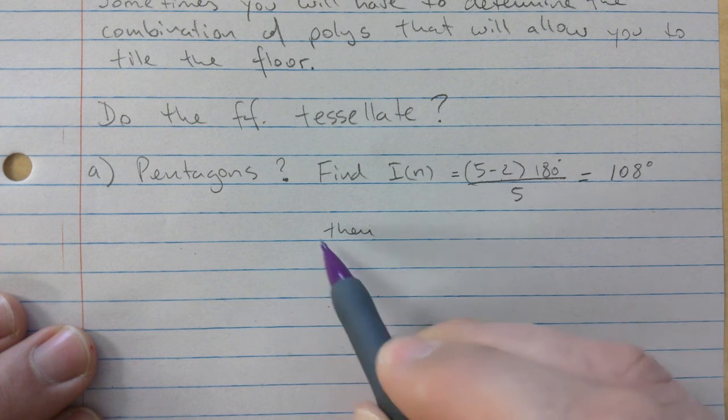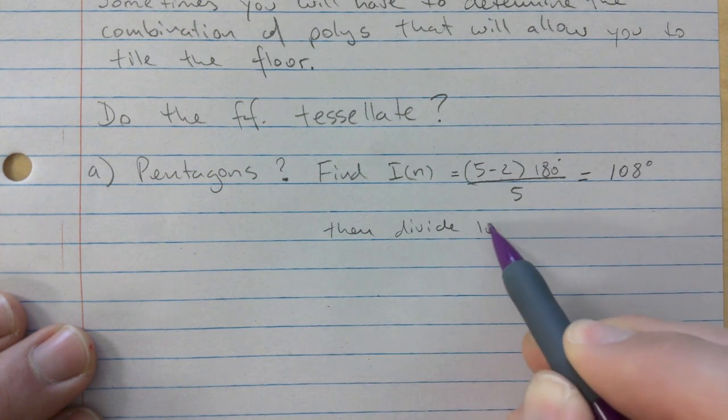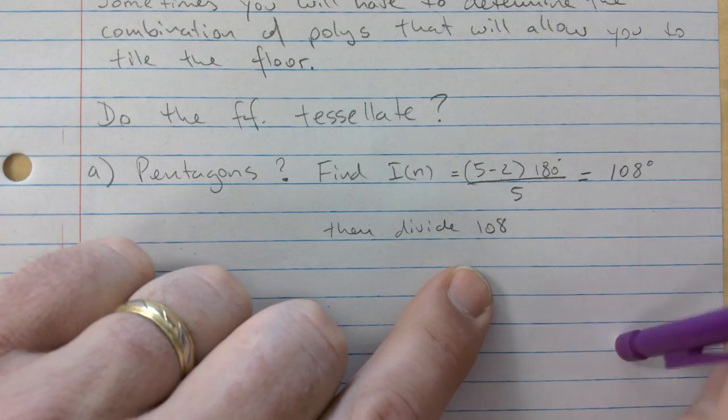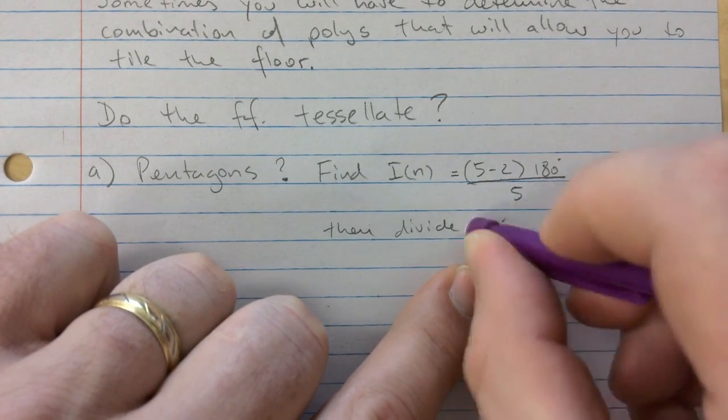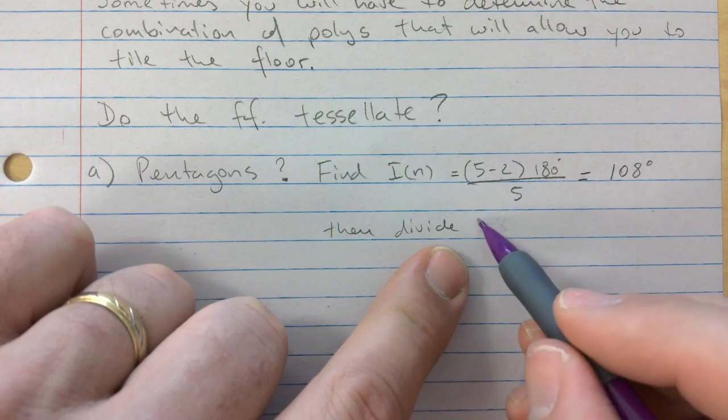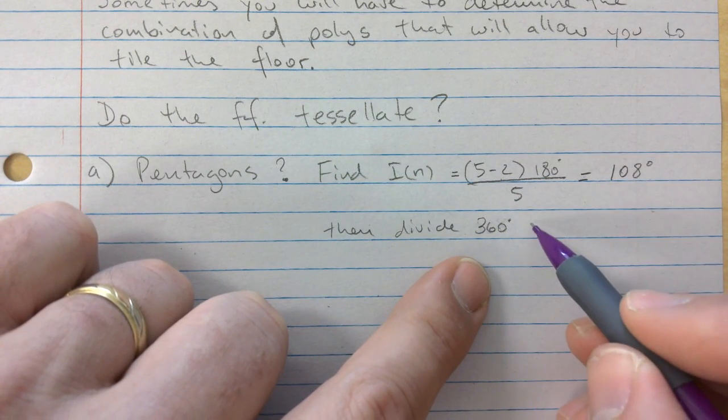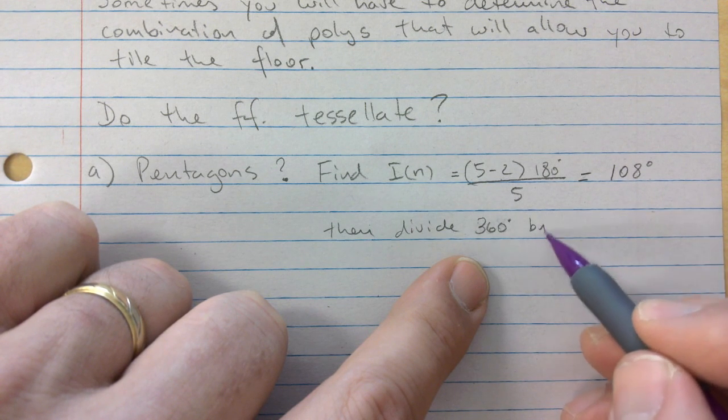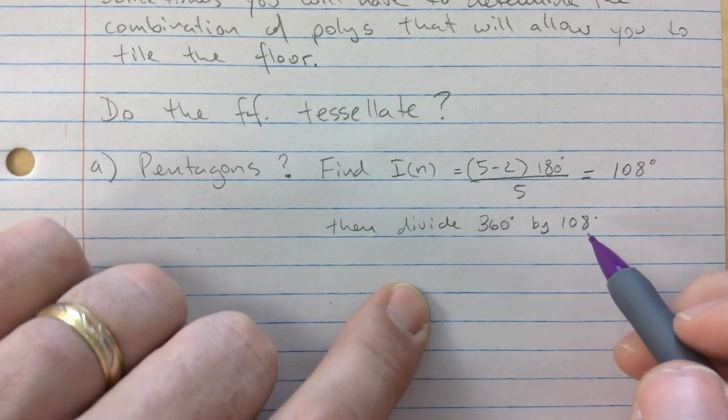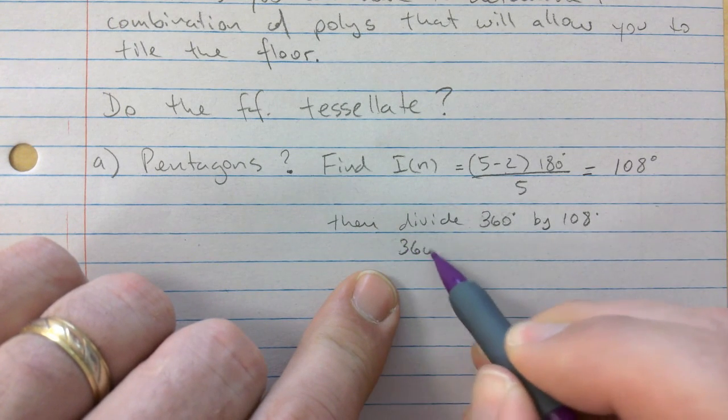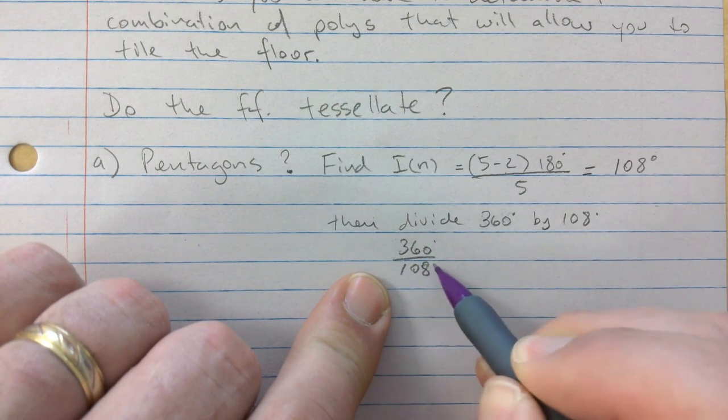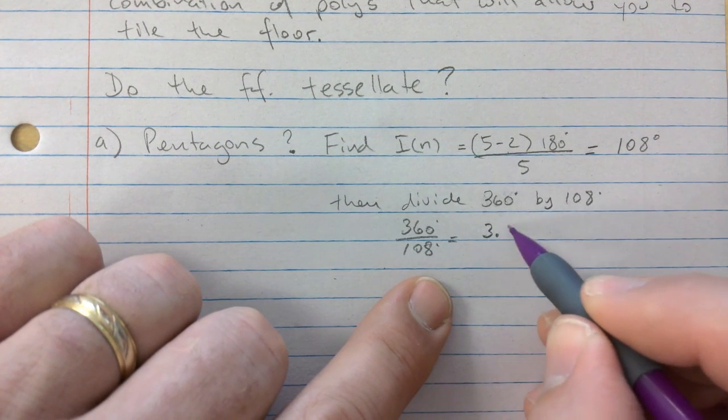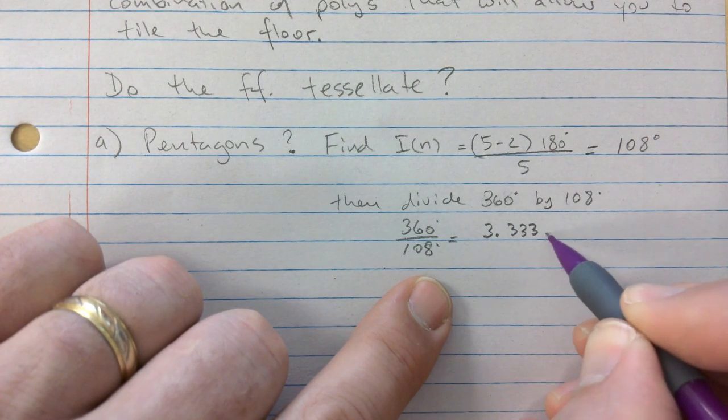Then I divide 360 by 108, I should say, and I will show you why. So we will go 360 divided by 108, and you get 3.333 and that just keeps going.